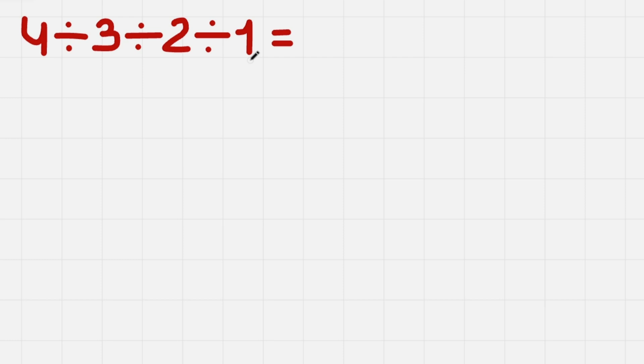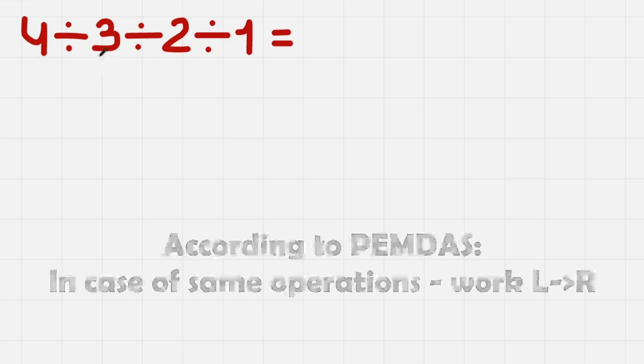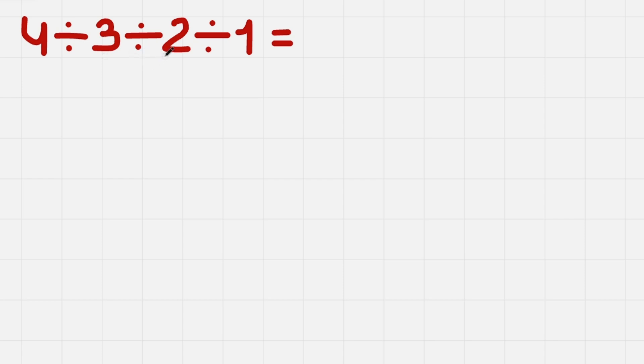To start with, let's calculate the first division. Because if we have the same operations, in this case divisions, we need to work from left to right. We cannot do this, then this, and then this. This is against the rules.